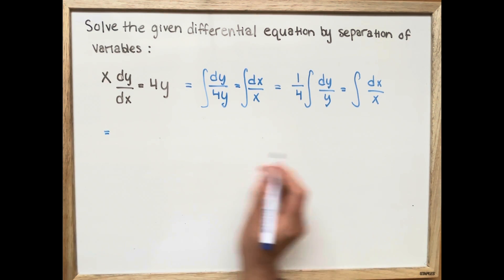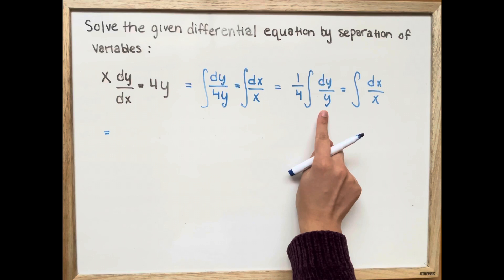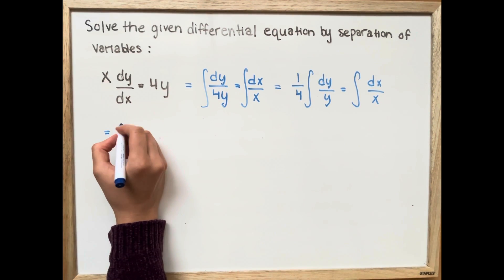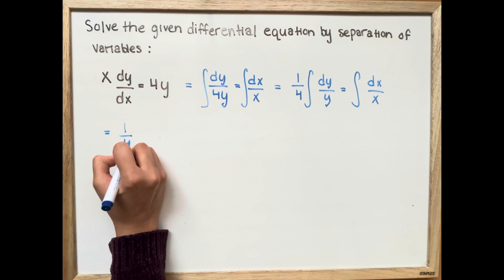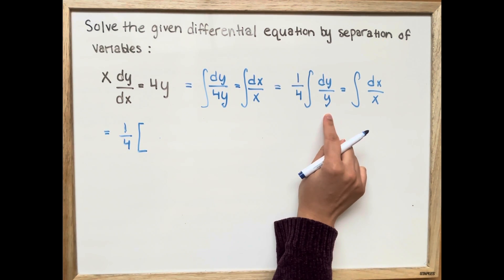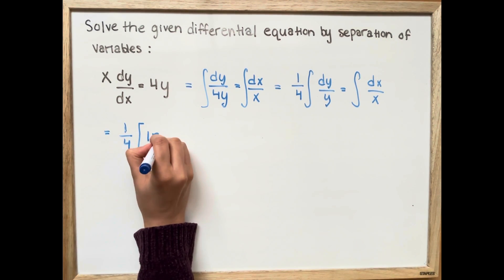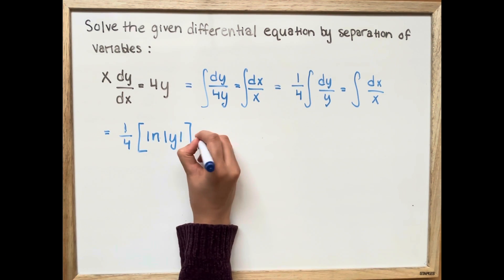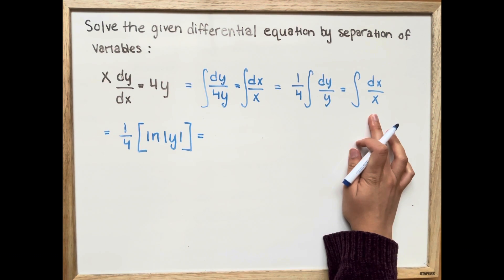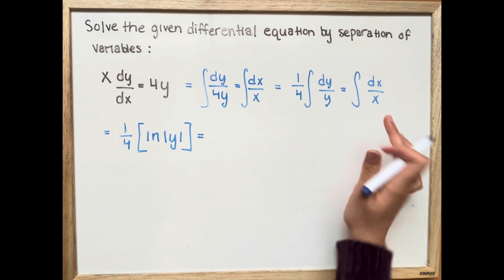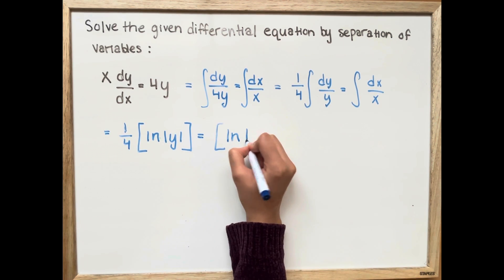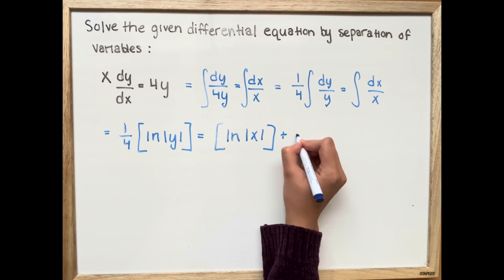The integral gives us 1 over 4 times the ln of the absolute value of y, which is equal to the ln of absolute value x plus c.